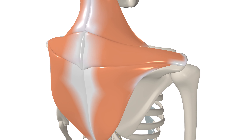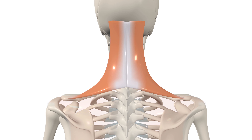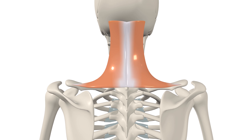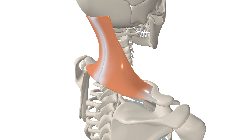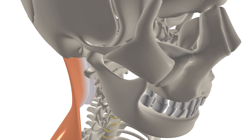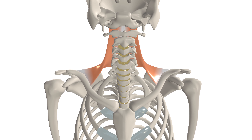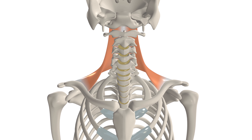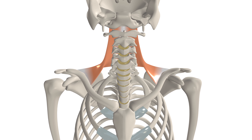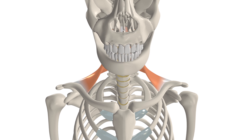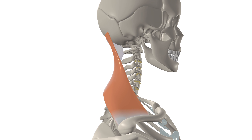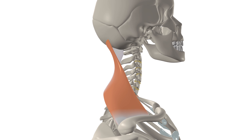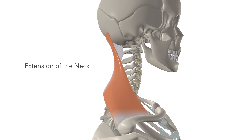In terms of the actions of the trapezius, the superior fibres elevate the point of the shoulder when the head is fixed in position, contracting to bring the lateral third of the clavicle toward the midline of the body. If the shoulders are fixed, the superior fibres draw the head directly backward, performing extension of the neck.